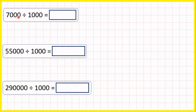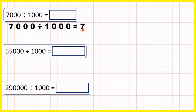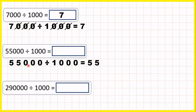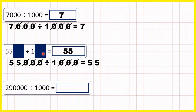Now we have multiples of 1,000 — numbers that end in three zeros — and we're dividing by 1,000. So 7,000 divided by 1,000 is 7 because we can cancel three end zeros, giving 7 divided by 1, which is 7. And 55,000 divided by 1,000: we have three zeros on the end of our number and we're dividing by 1,000 so we can cancel those three end zeros. 55 divided by 1 is 55, so that's our answer.